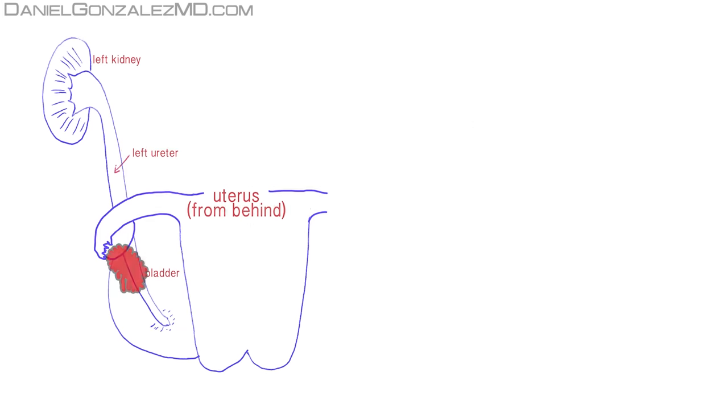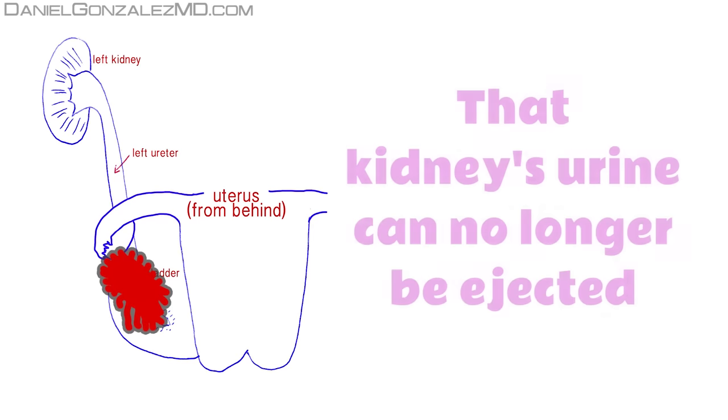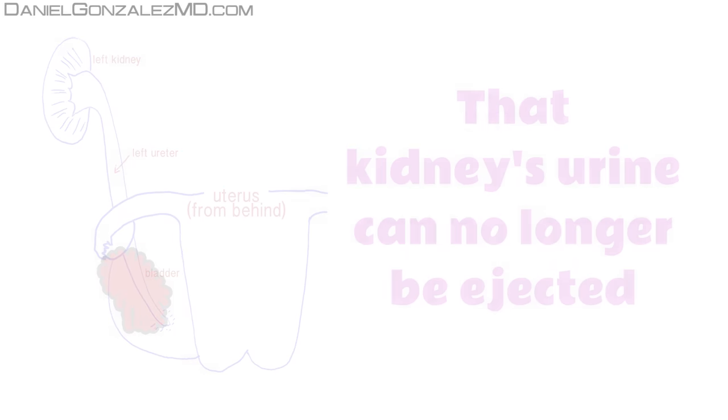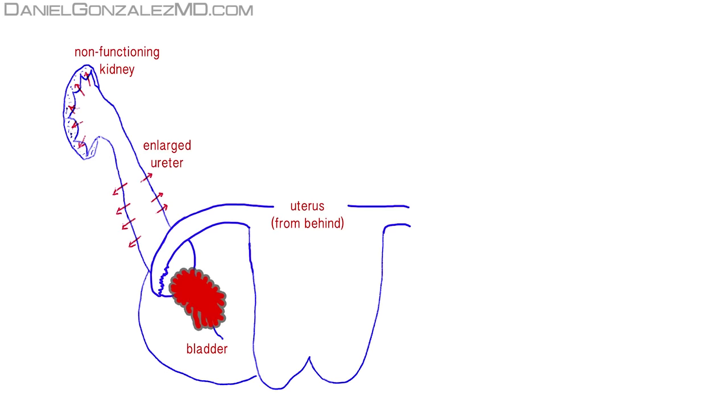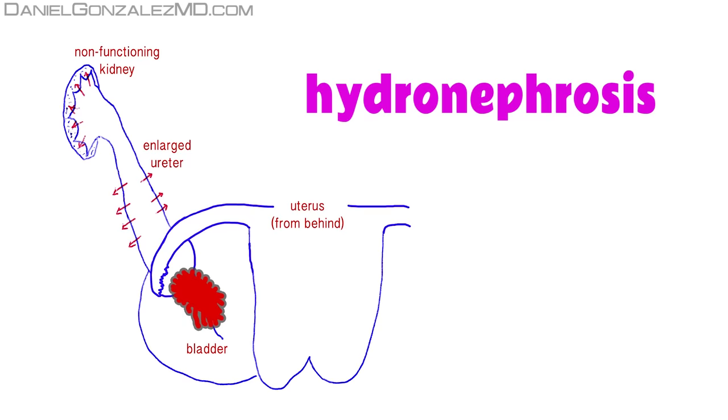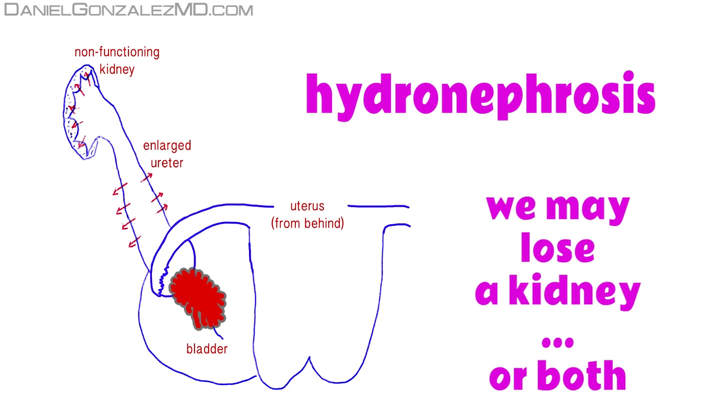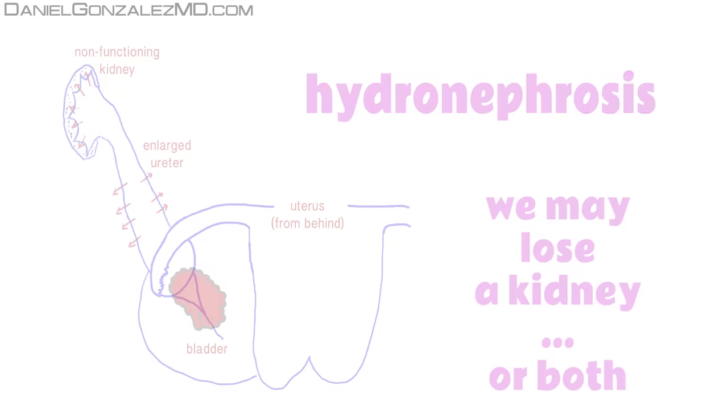Before breaking the bladder wall, ovarian cancer can cause crashing of the entry into the bladder, of one or both tubes that bring urine from the kidneys, the ureters, so that urine can no longer be ejected. Pressure in the kidney will increase, and hydronephrosis occurs. If we don't realize that in time, we may lose a kidney, or both.